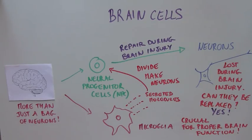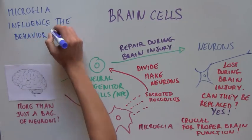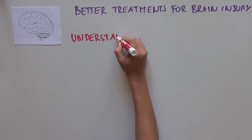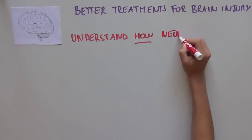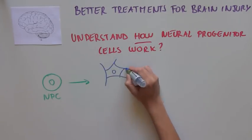So from what I've told you so far, you understand that microglia can influence the behavior of NPC cells. To be able to design better treatments for brain injury, it is important that we understand how NPCs work, because NPCs are the ones that replenish the neurons that are lost.